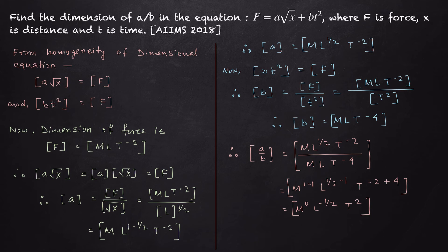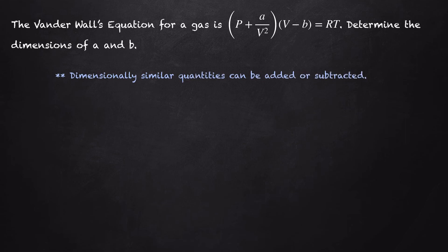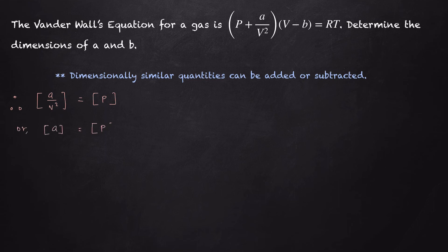Now let's solve another question. The Van der Waals equation for a gas is (P + a/V²)(V − b) = RT. We need to determine the dimensions of a and b. To solve this, we use the property that only dimensionally similar quantities can be added or subtracted. To add a/V² with pressure P, the quantity a/V² must also have the dimension of pressure. Therefore, dimension of a = dimension of P × dimension of V².